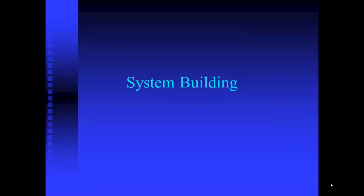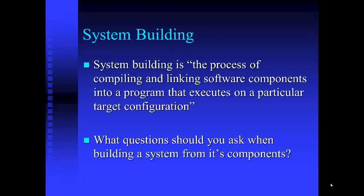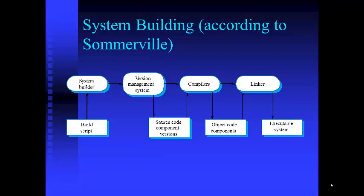System building is the process of compiling and linking software components into a program that executes on a particular target configuration. According to Somerville, system building requires a system builder, build script, version management system, compilers, and linkers. Putting these together — beginning with the builder and version management system, going to the compiler and linker — will result in an executable system.